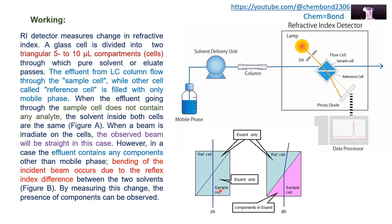In Figure A, only the mobile phase is passing through both the sample cell and the reference cell. There is no difference in refractive index or other properties, so it will not show any deflection or change, because both cells contain only the mobile phase without analyte. When the beam is irradiated on the cell, the observed beam will be straight. With no change in refractive index, the beam passes straight through the cells and no deflection is observed.